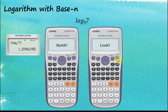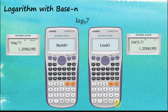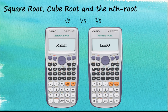For Linear input/output it's slightly different. We use the same buttons but there's no container, so insert the base first — base is 5 — then separate the base from the number using a comma, then 7, close brackets, and equal. That's how to find the answer for a logarithm with base n.